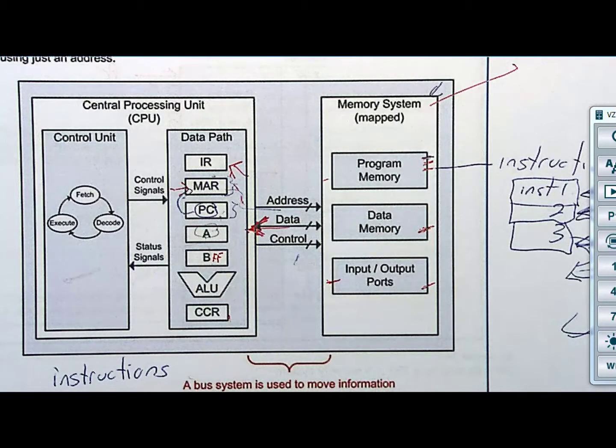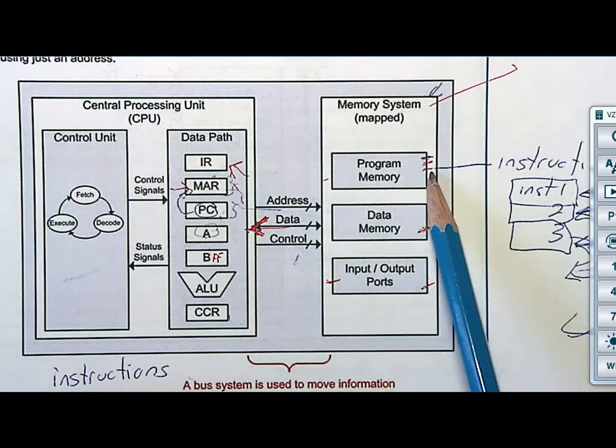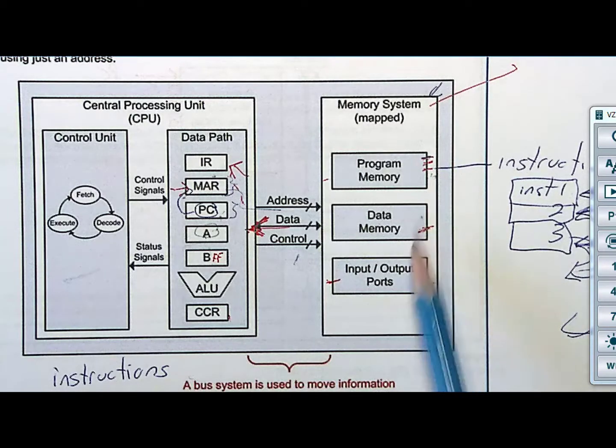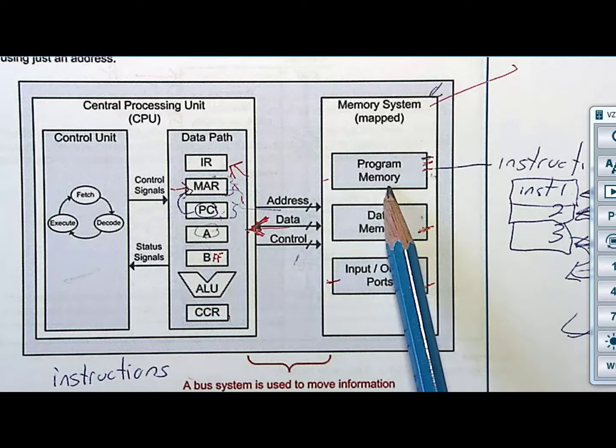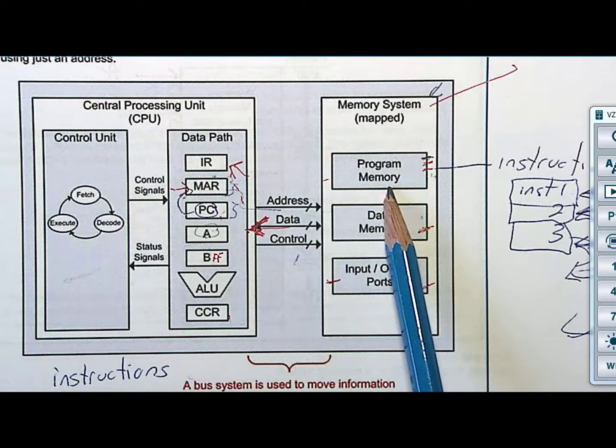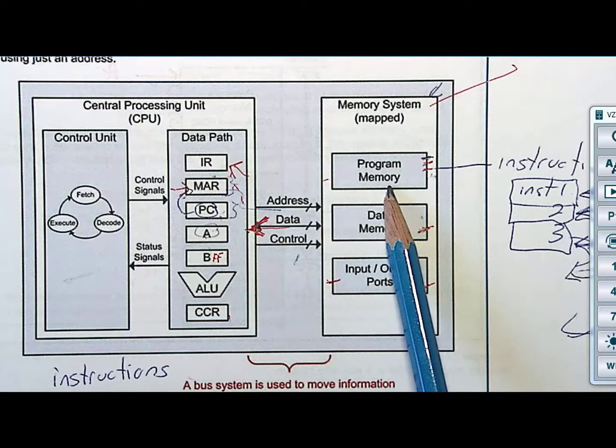Part two of the question. Where are you going to put this information? You've got three choices. You can either put it in program memory, data memory, or input output ports. Do you want to put it into program memory? Why would you make a program to overwrite your program?